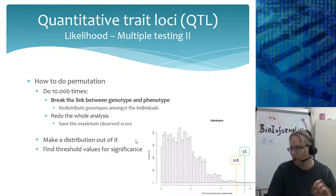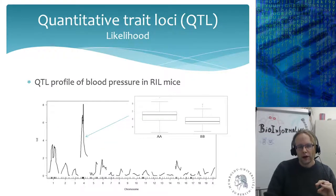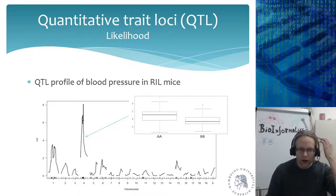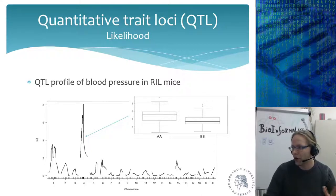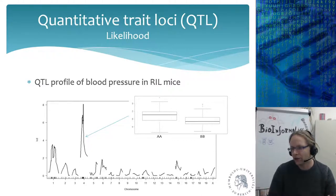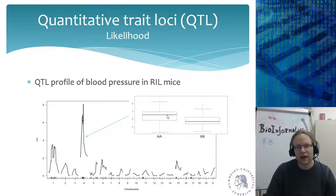Generally Bonferroni and permutation thresholds are not too far apart, but permutation is a very valid strategy. Here is one example data set I took from R/qtl, a software package I contributed to during and after my PhD. This is the blood pressure QTL profile in recombinant inbred mice. These mice are either AA or BB at a given marker, and we do the statistical test to see if the AA group differs from the BB group.